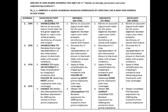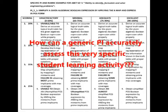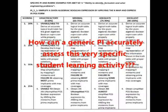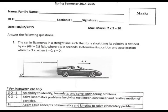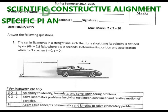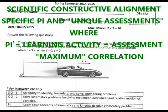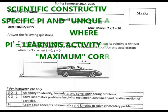This specific PI and rubric on simplifying Boolean expressions by applying K-map helps assess a very specific activity in a precise, structured format. How can a generic PI accurately assess this specific student learning activity? In scientific constructive alignment, specific PI assessments and learning activities have maximum correlation.